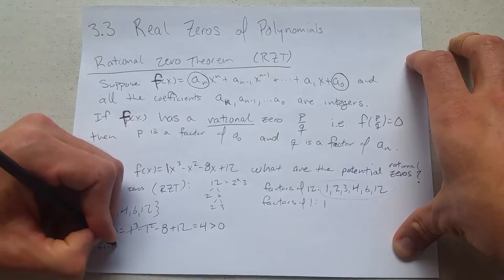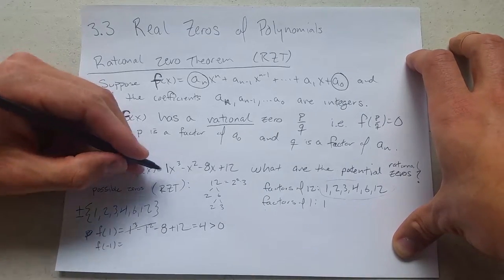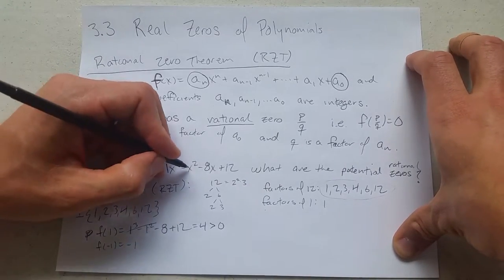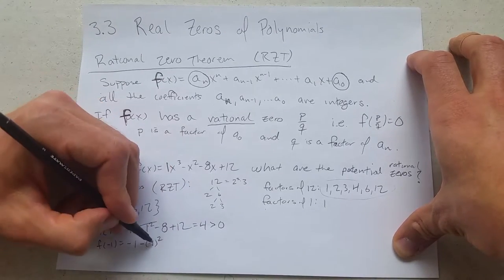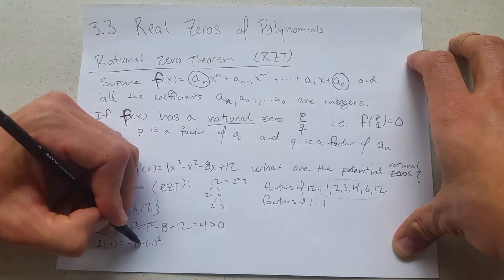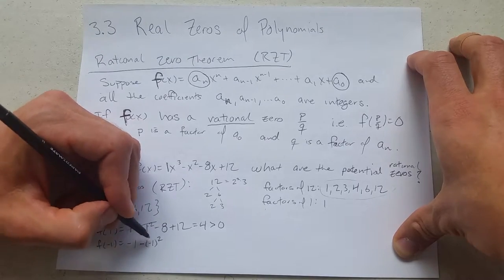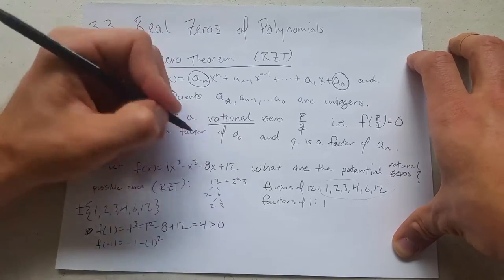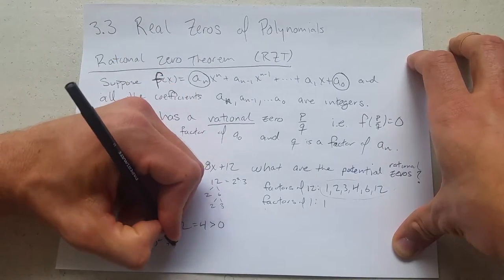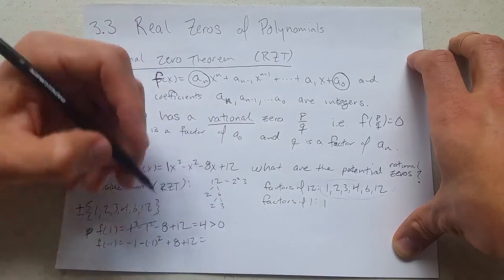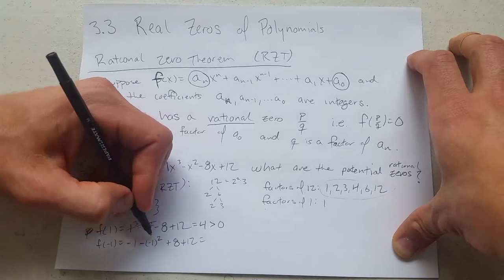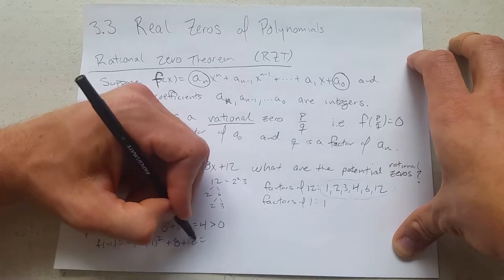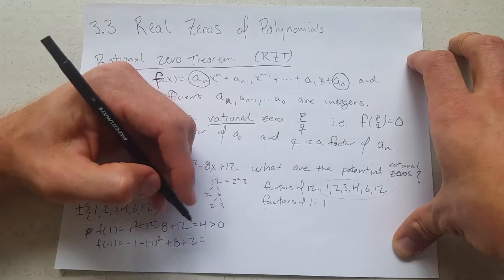We're going to try -1 now. So (-1)³ is -1. (-1)² - I'm going to be a little careful with the signs - this is going to be positive 1, and with the minus sign that makes it total -1. -8 times -1 is +8, plus 12. We have -1 - 1, this is -2.